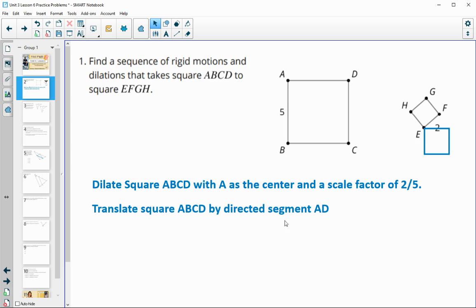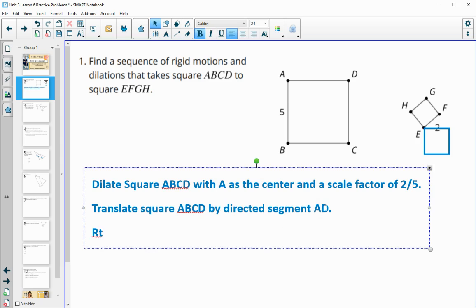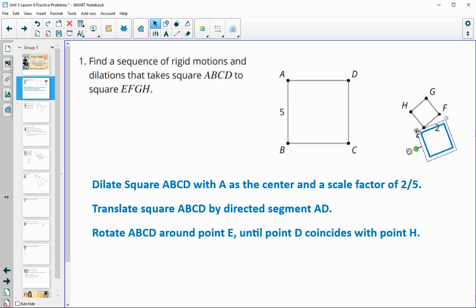And then I'm going to need to rotate to get it on top of the other one. So we'll rotate ABCD around point E, since that's what it's touching, until point D coincides with point H or until D lands on point H. So either way, whichever one you like better, but then that's going to bring it all the way like this and then they would be exactly on top of each other.